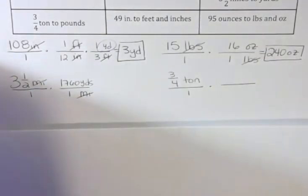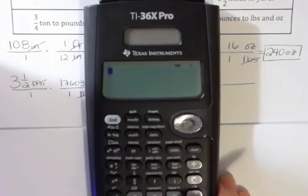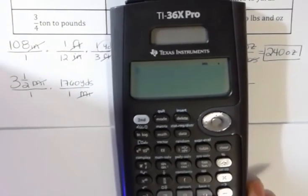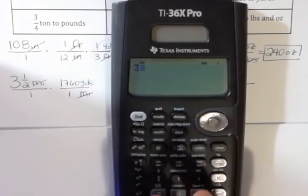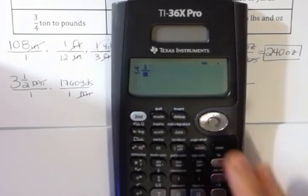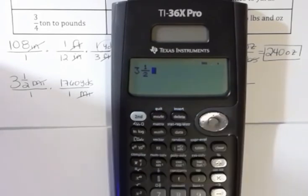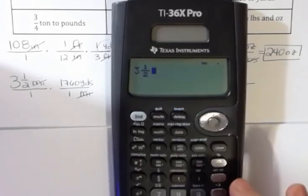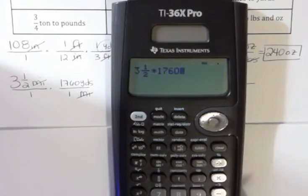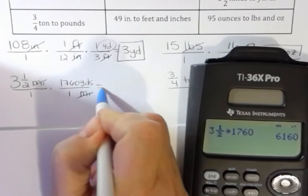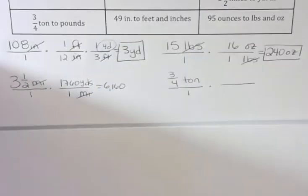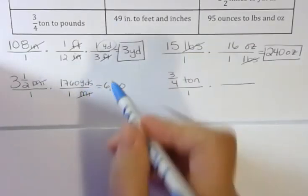I'm going to go ahead and use my calculator. I'm going to use the fraction button, even though 3 1⁄2 is the same as 3.5. But I'm going to do this, 3 1⁄2 times 1,760. That's 6,160. What's the unit? Well, the unit is going to be yards, because the miles canceled, leaving the yards behind.